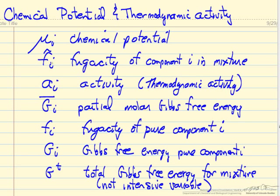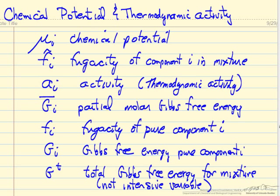Fugacity — the little hat indicates it is one component, component i in a mixture. This is the activity of that same component, thermodynamic activity, since activity is used in other fields. The partial molar Gibbs free energy — the line over the top indicates it is a partial molar quantity. Then the fugacity of just a pure component, no mixture. The Gibbs free energy of pure component, and then the total Gibbs free energy of a mixture. This last variable is extensive; all the others are intensive, meaning they are independent of the amount — they are molar quantities. The total depends on the amount.